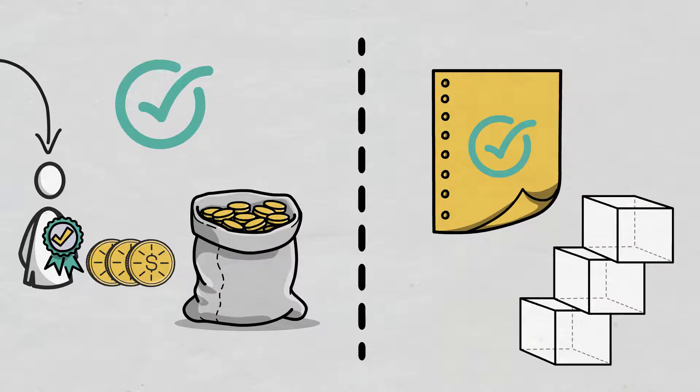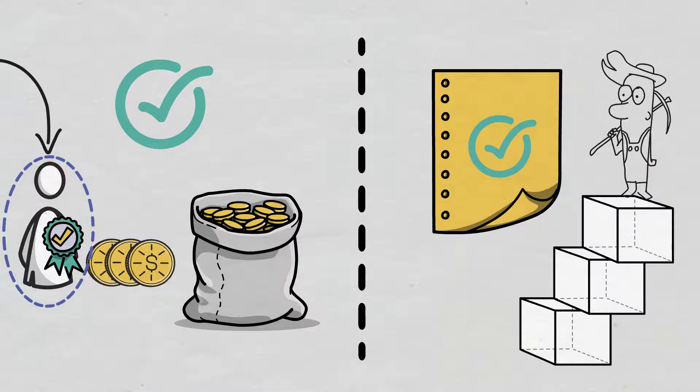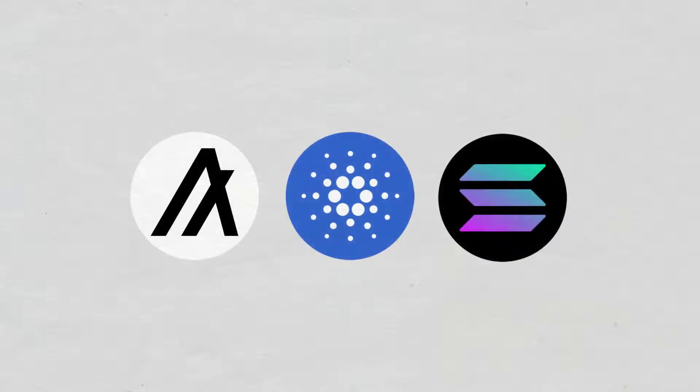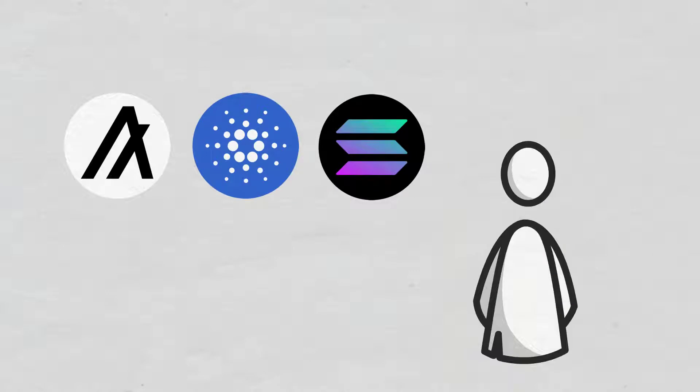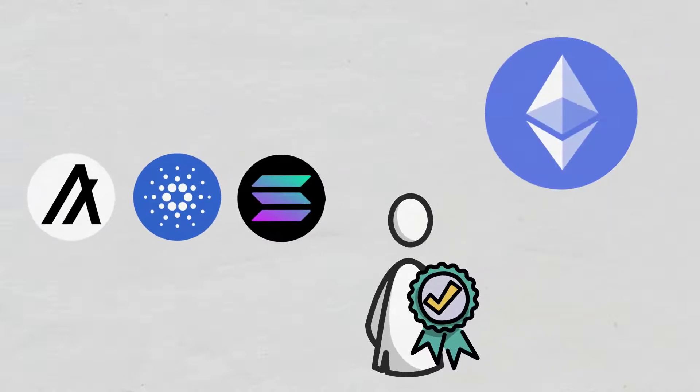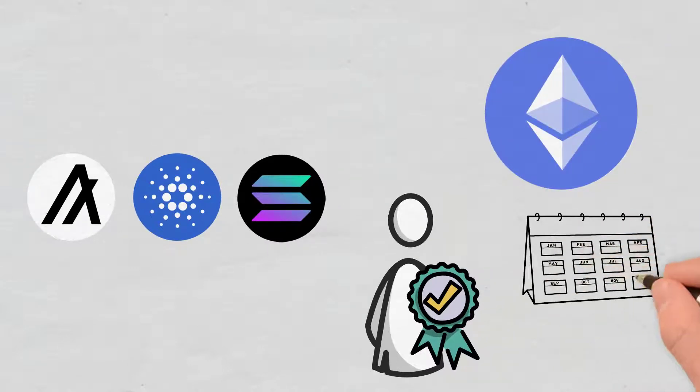Practically, the work of miners through proof-of-work is now done by validators through proof-of-stake. Platforms such as Algorand, Cardano, and Solana are currently using this consensus algorithm. There are plans for the upgraded version of Ethereum to migrate to proof-of-stake by the end of this year.